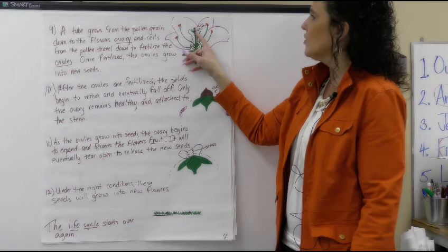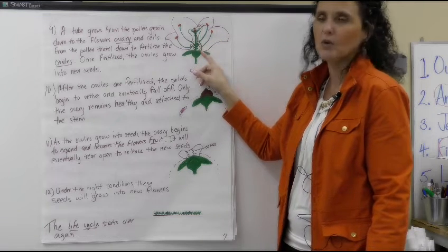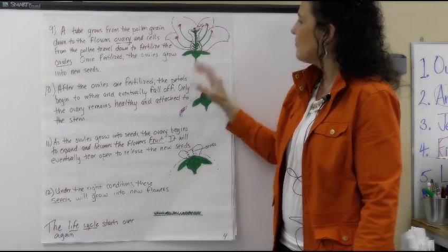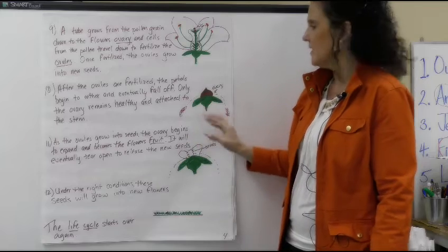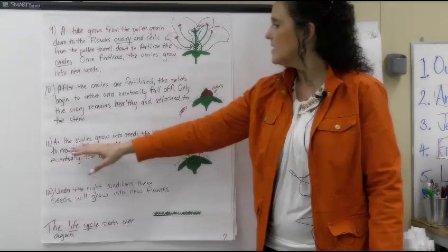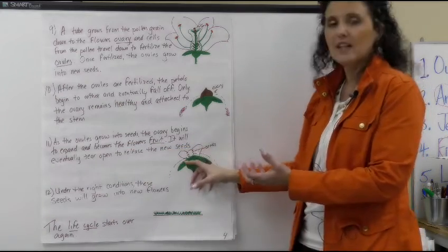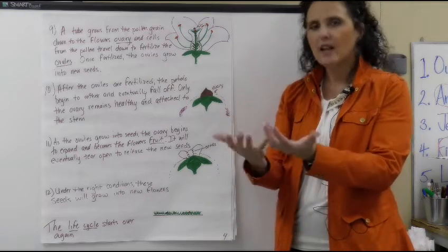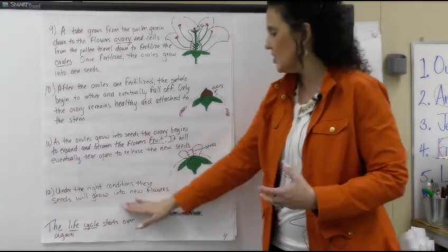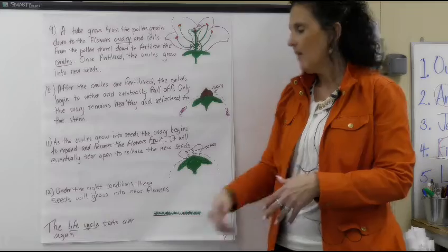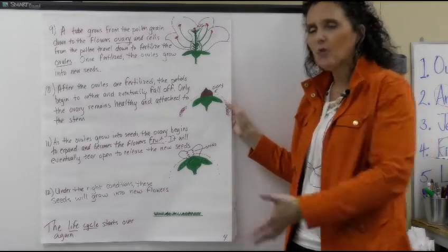A tube grows from the pollen grain down to the flower's ovary, and little cells from the pollen grain travel all the way down and fertilize the ovules. The ovules grow into new seeds. After that happens, all of those petals will fall off the flower, and now we have a healthy ovary attached to the stem. The ovary is the fruit — as the ovules grow into seeds, the ovary expands and becomes the fruit, eventually tearing open to release new seeds. Those seeds land on the ground, and if the right conditions are there, they'll start to grow again. That's called a life cycle — cycle meaning it goes in a circle.